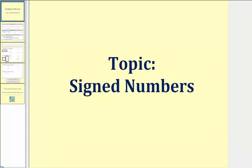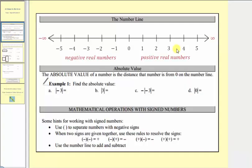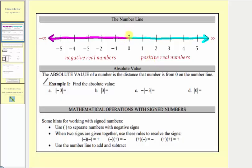Welcome to a review lesson on signed numbers. Looking at the number line, all of the positive real numbers are located to the right of zero, or all the numbers greater than zero. As we move right on the number line, we approach positive infinity. All the negative real numbers are to the left of zero, or all the numbers less than zero. As we move left on the number line, we approach negative infinity. Because we determine whether a number is positive or negative based upon whether it's less than or greater than zero, zero is neither positive nor negative.